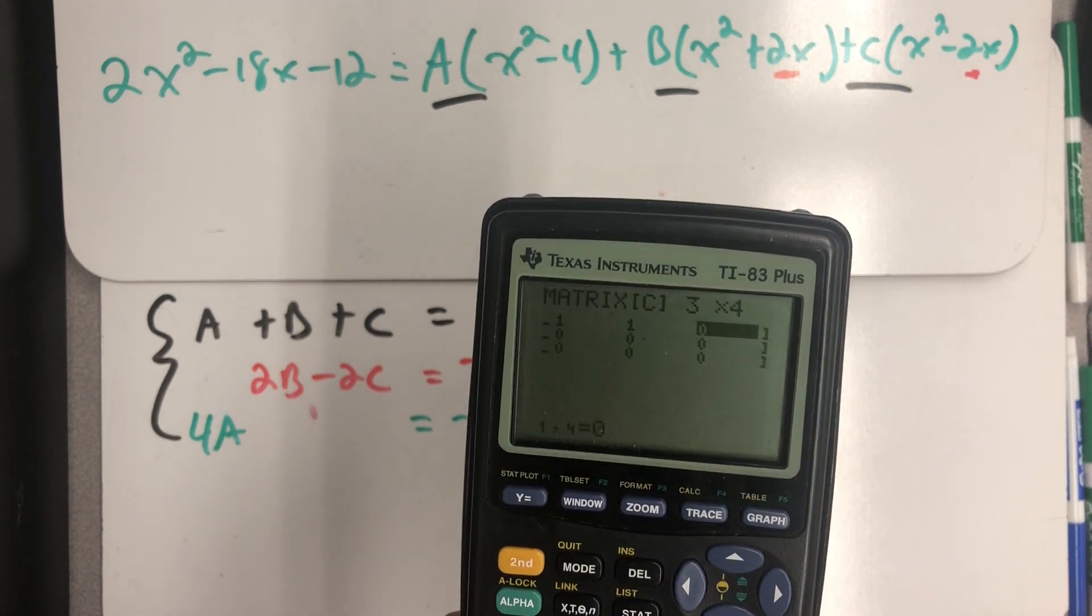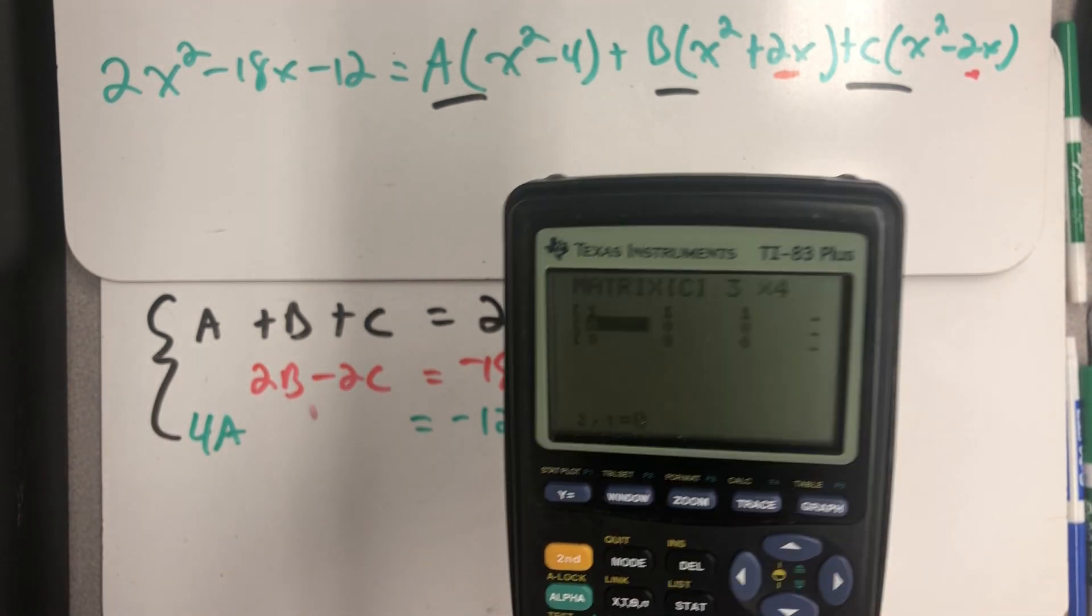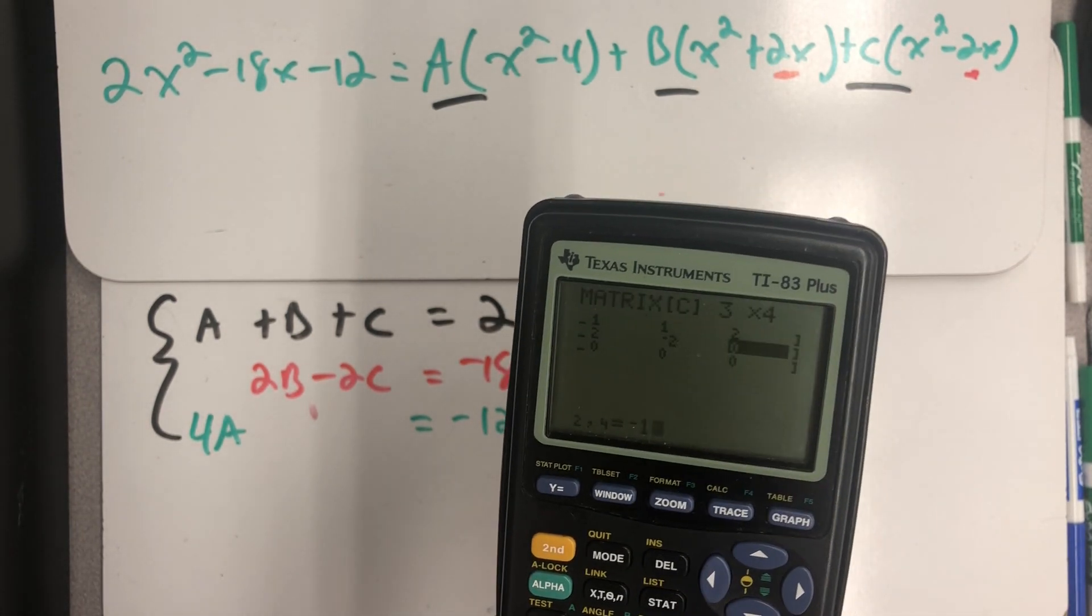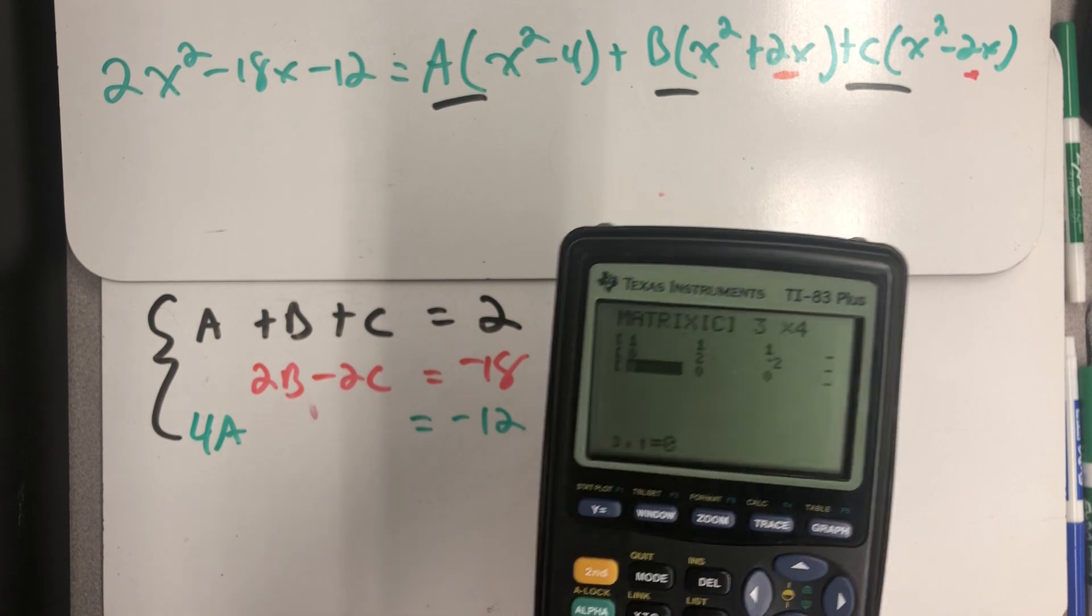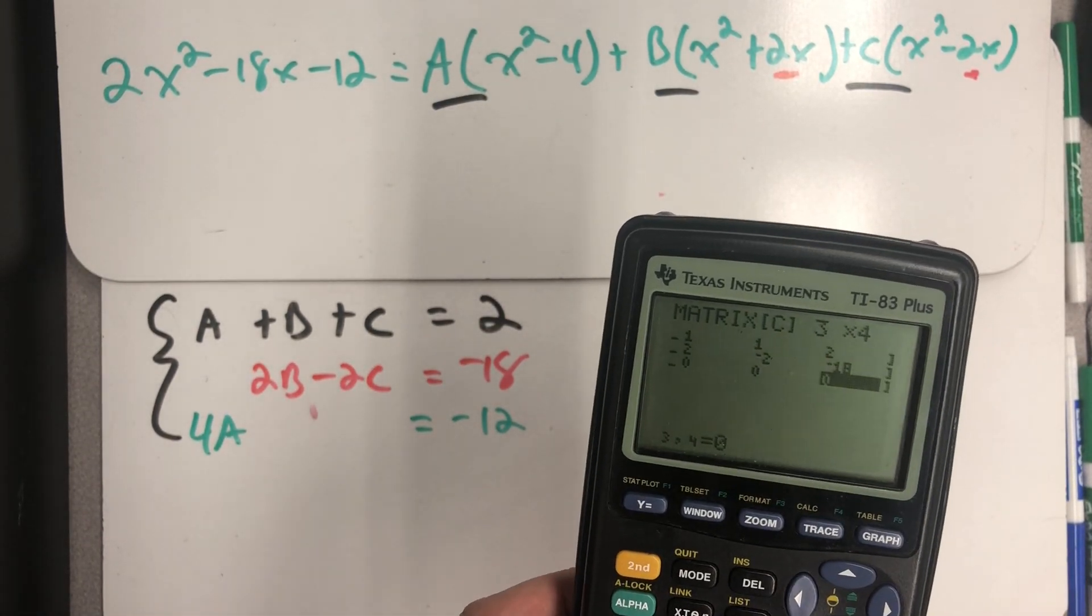One, one, one, two. And then zero, two, zero, two, minus two, minus 18. Four, zero, zero, minus 12.